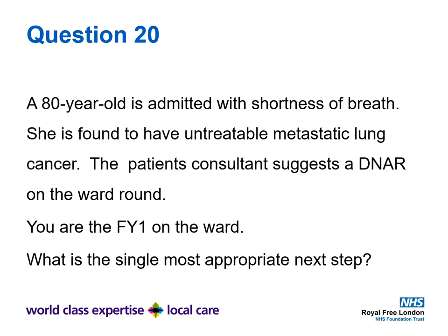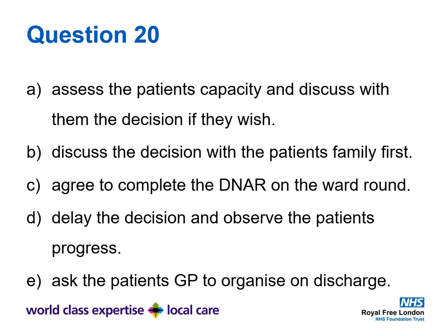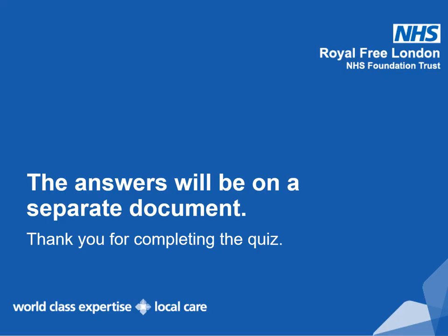Question twenty. An 80-year-old is admitted with shortness of breath and is found to have untreatable metastatic lung cancer. The patient's consultant suggests a DNAR on the ward round. You are the FY1 on the ward. What is the single most appropriate next step? Is it A) assess the patient's capacity and discuss with them if they wish, B) discuss the decision with the patient's family first, C) agree to complete the DNAR on the ward round, D) delay the decision and observe the patient's progress, or E) ask the patient's GP to organise on discharge? That completes acute medicine quiz number two. A video and document with the answers will follow — thank you for completing the quiz.